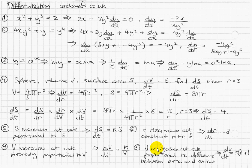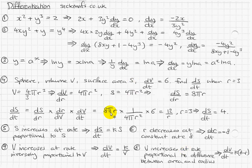Finally, to make it more complex: 'V increases at a rate proportional to the difference between the area and the radius.' At a rate gives dV/dt, proportional gives k times, and the difference between area and radius is (area − radius). So dV/dt = k(area − radius). This topic continues into the integration video, because you can turn these differential equations into integration problems — see the link for the next video.